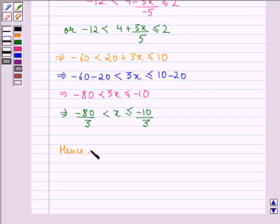Hence the solution set is the interval (-80/3, -10/3], where -80/3 is not included but -10/3 is included.